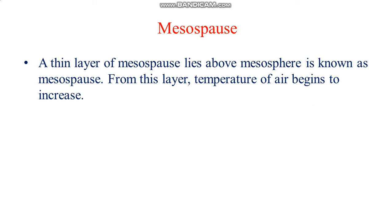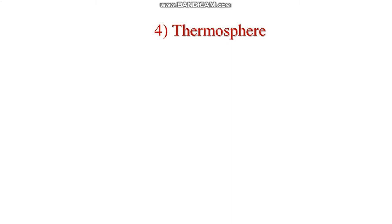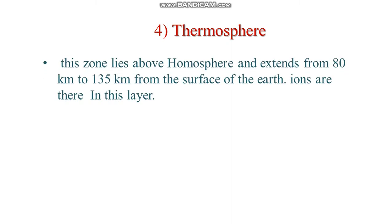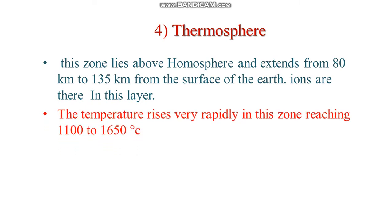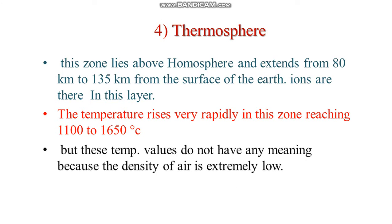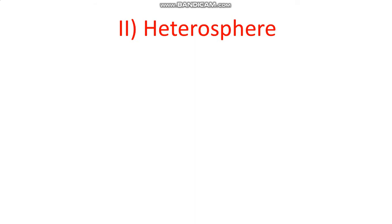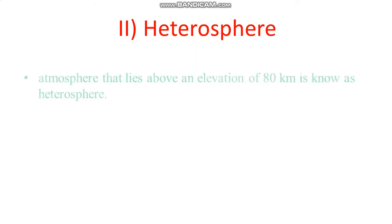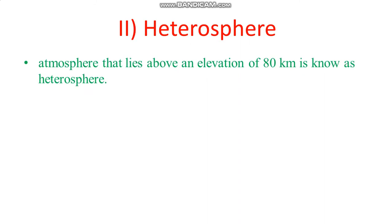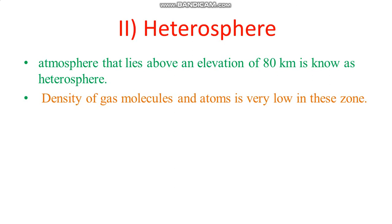The thermosphere is the fourth layer. This zone lies above the homosphere and extends from 80 km to 135 km from the surface of the earth. Ions are concentrated in this layer. The temperature rises very rapidly in this zone, reaching 1,100 to 1,600 degrees Celsius in the thermosphere. However, these temperature values do not have much physical meaning because the density of air is extremely low. On the basis of chemical composition, the second division is the heterosphere, which lies above an elevation of 80 km, with very low density of gas molecules and atoms.